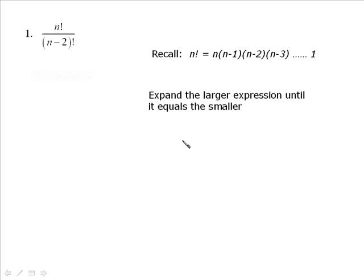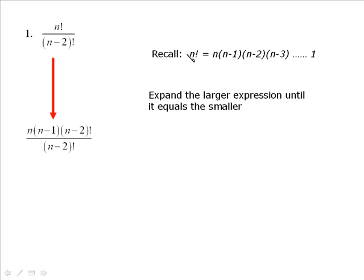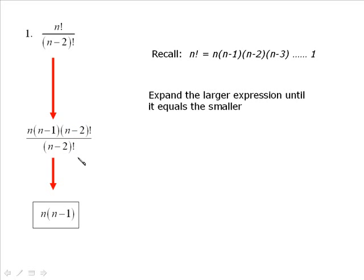For n factorial over n minus 2 factorial, n is larger than n minus 2. So we break that first one down: n times n minus 1 times n minus 2 factorial. As soon as I saw it was equal to the second one, I stopped, putting the factorial symbol on to mean et cetera. Once you get to this point, the n minus 2 factorials cancel, giving you n times n minus 1. And we're done.